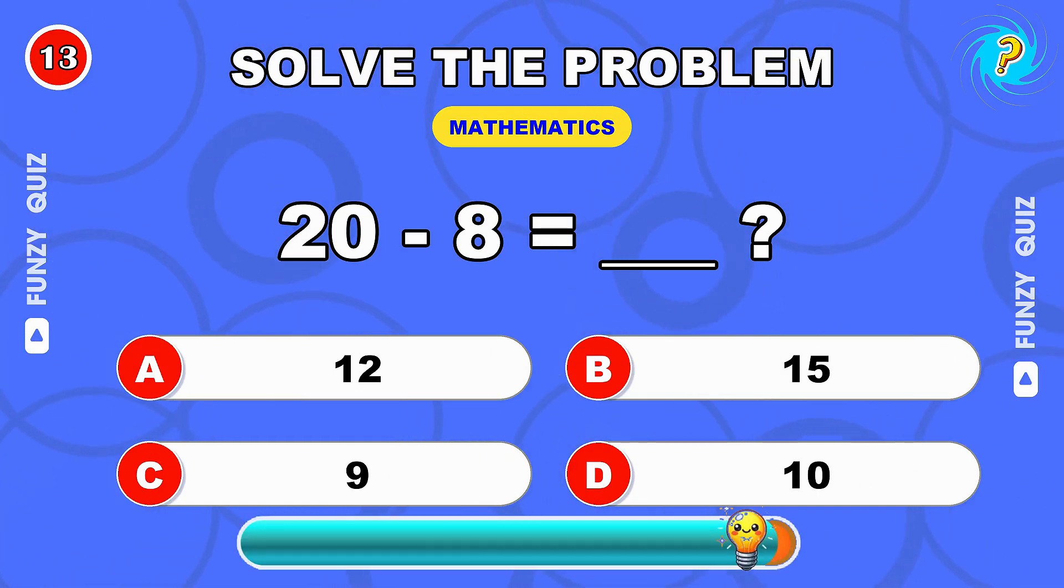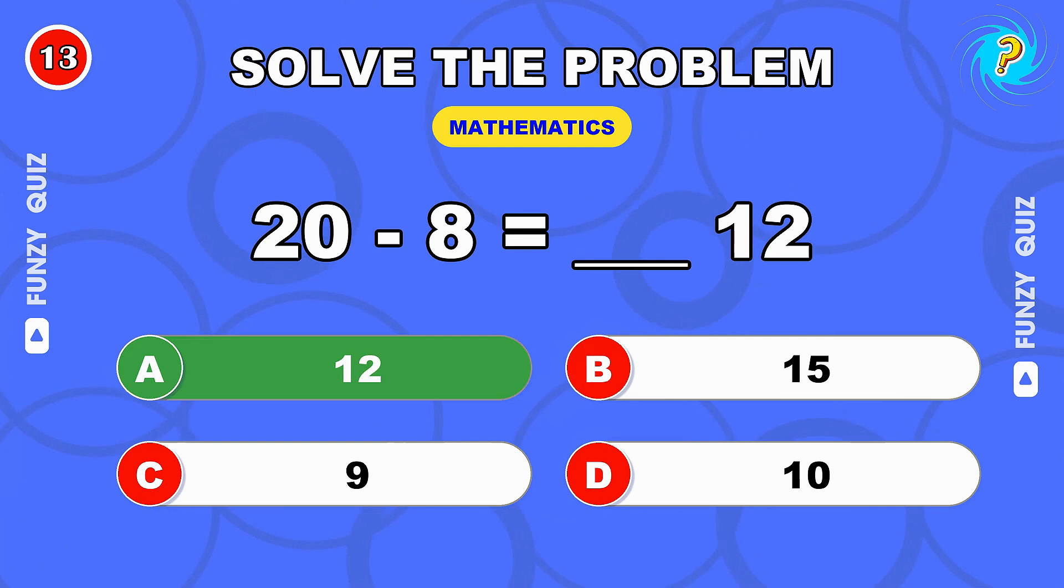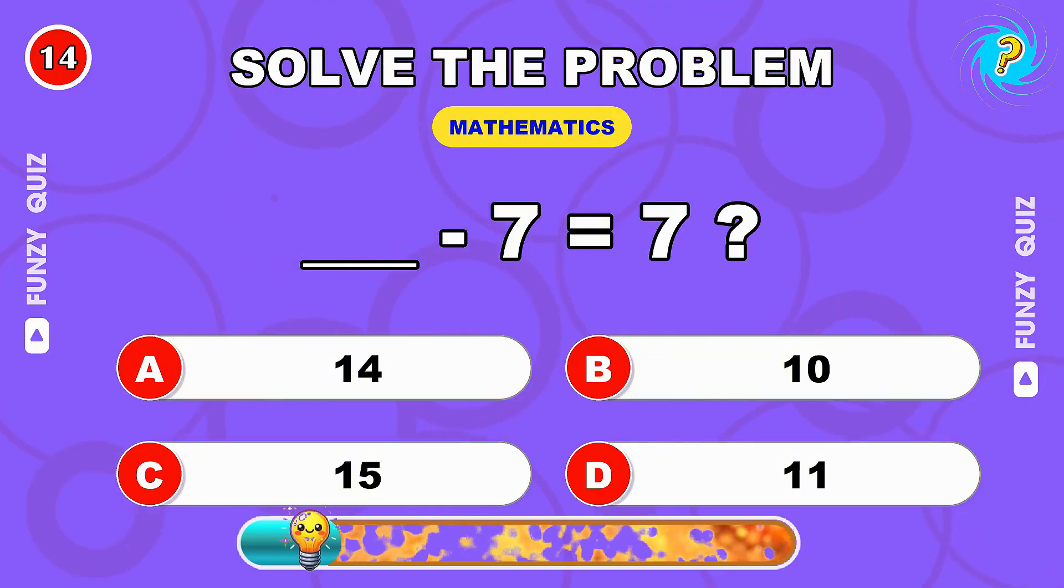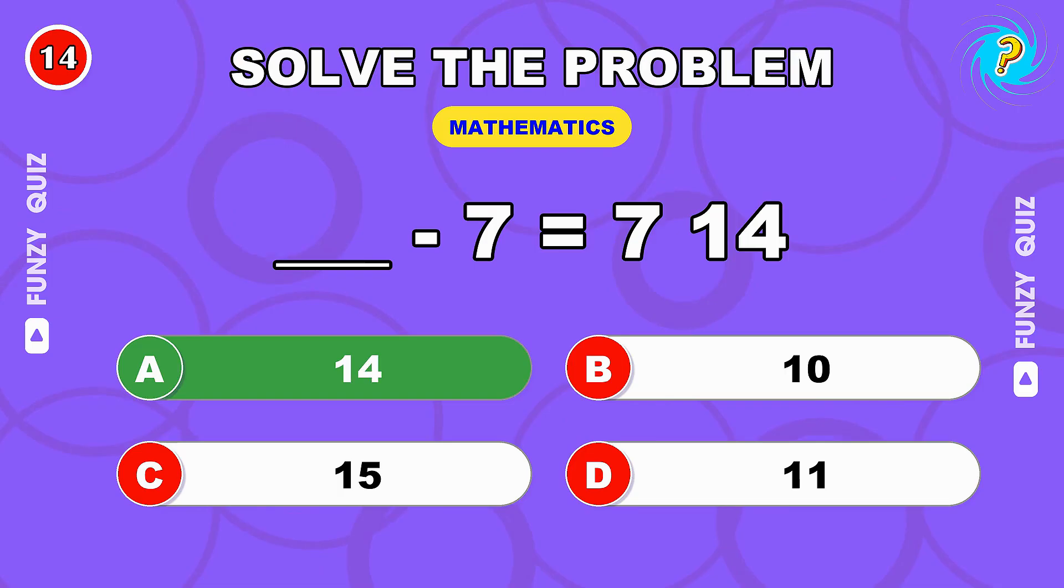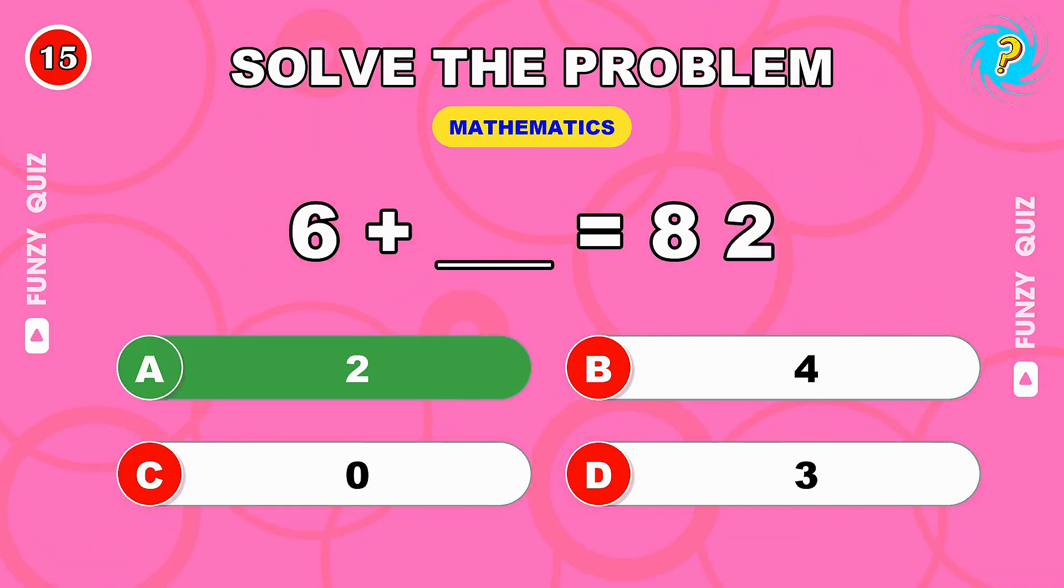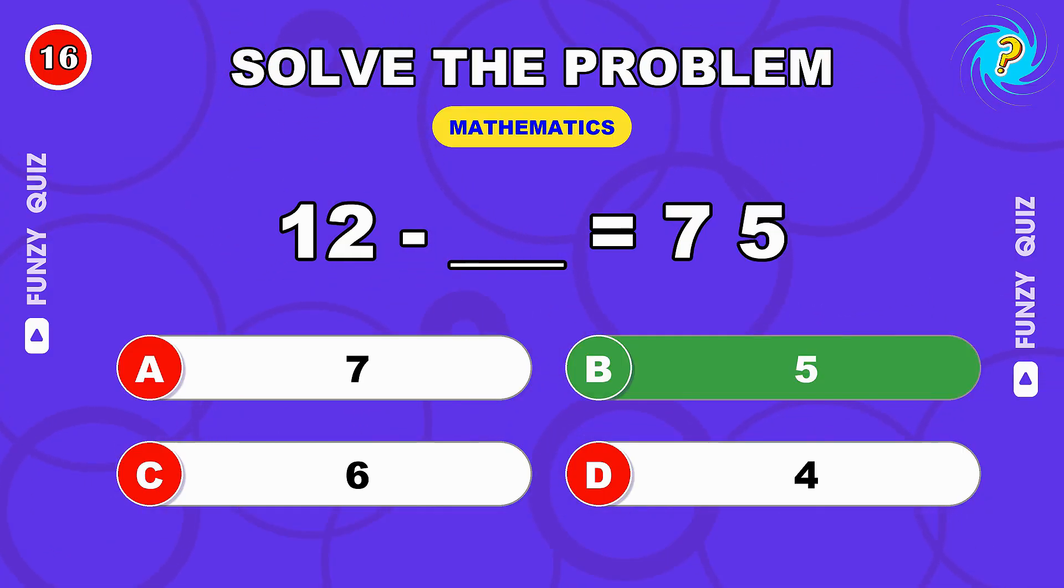How about 20 minus 8? 12, exactly. Next problem equals 14. Yes. 6 plus what makes 8? 2, spot on. 12 minus what gives you 7? 5, that's correct.